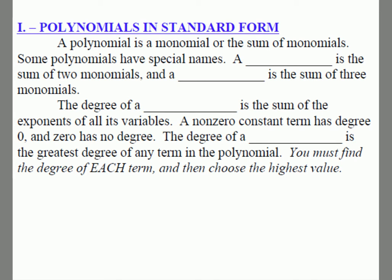So let's first figure out what a polynomial is. A polynomial is a monomial or the sum of monomials. Those are usually separated by a plus or a minus. Some polynomials even have a special name. A binomial is going to be the sum of two monomials, and a trinomial is going to be the sum of three monomials.